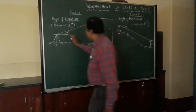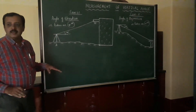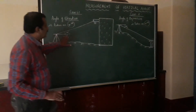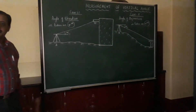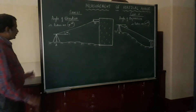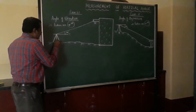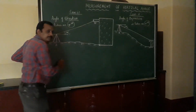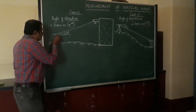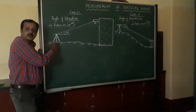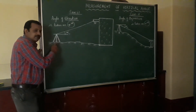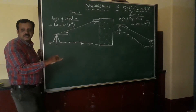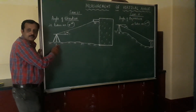So our objective is to find vertical angle alpha 1 and alpha 2 using the transit theodolite. The first step is to set the theodolite over the station point A, because we have to find the angle alpha 1 between A and B. Set the instrument over this station, then do all the temporary adjustments — centering, leveling, and removing parallax — at every instrument station.